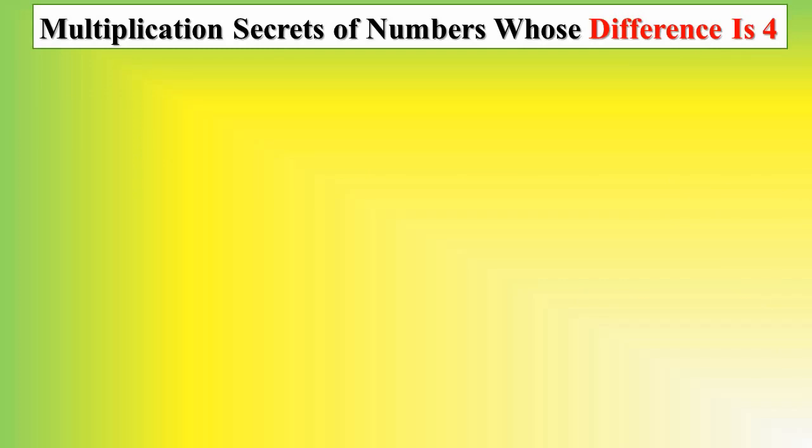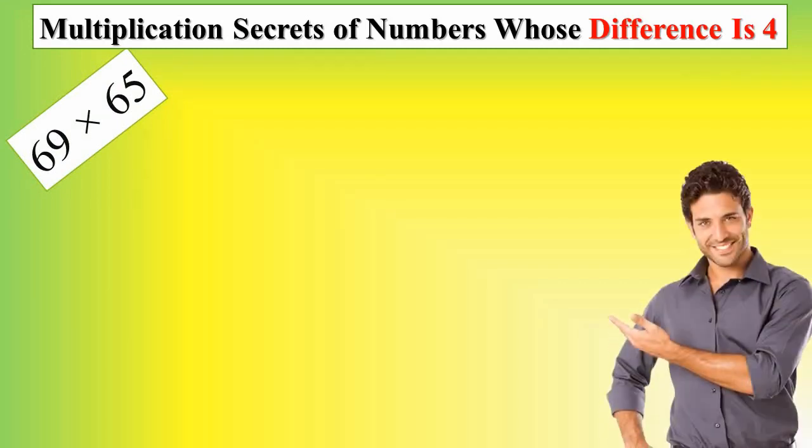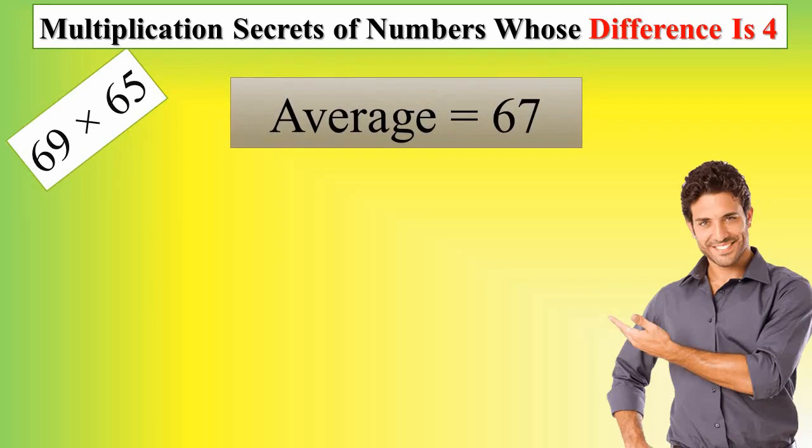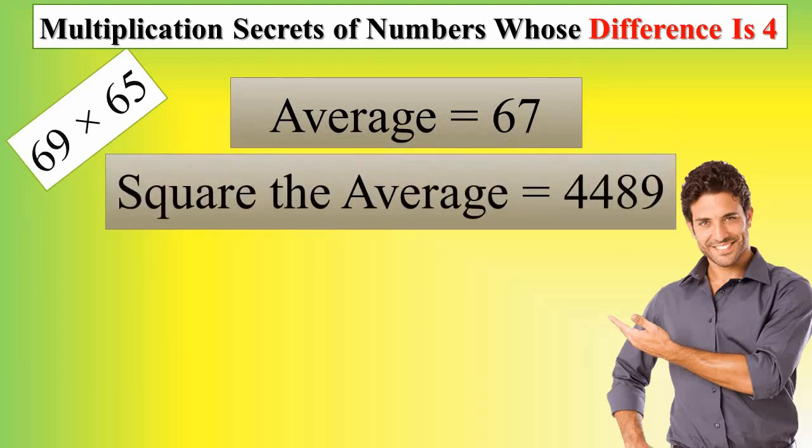As you see in the picture, we have 2 numbers, and we use those 2 steps. 69 multiplied by 65. First of all, we need the average: 69 plus 65 divided by 2 equals 67. Then we square the average of 2 numbers: 67 multiplied by 67 equals 4,489.